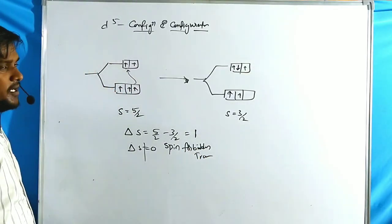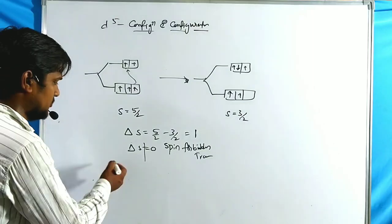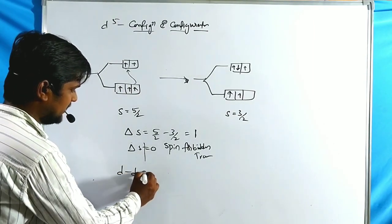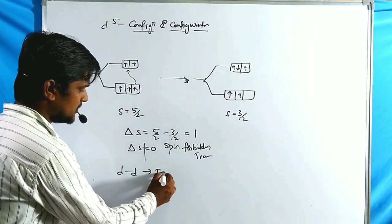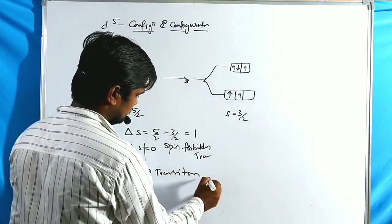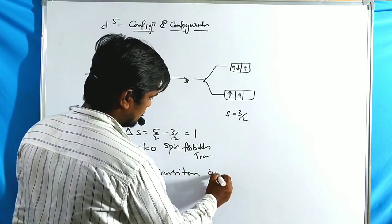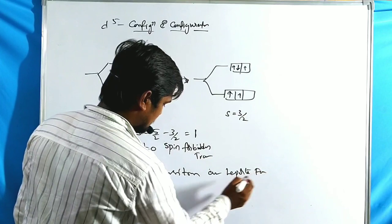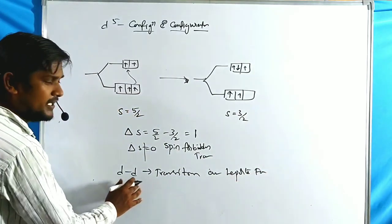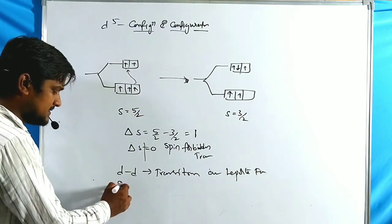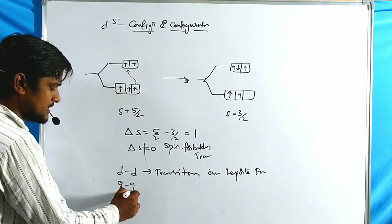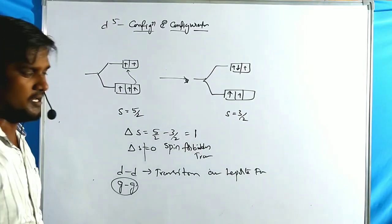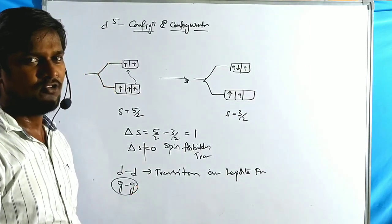Now let us consider another selection rule — the Laporte rule. d-d transitions are Laporte forbidden. These are zero-to-zero parity transitions, which is why they are forbidden.